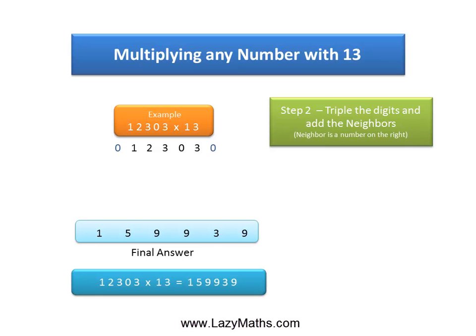So 12,303 times 13 is equal to 159,939. And that's it.